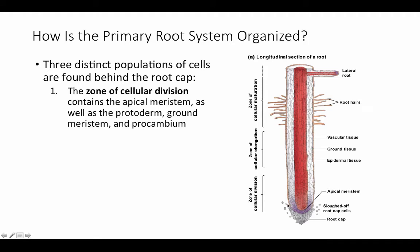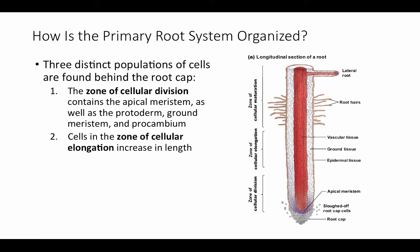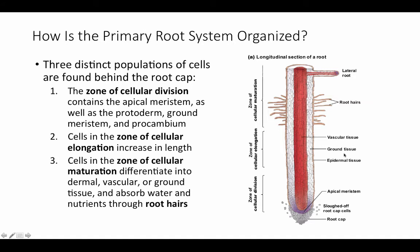We find three distinct populations of cells behind the root cap. First, there's the zone of cellular division. Then there's the zone of elongation — when a plant cell divides, it lays down a new cell wall between the divided nuclei, leaving cells at half the original size. To reach normal cell size, they need to elongate, primarily by expanding the central vacuole. Finally, there's the zone of cellular maturation or differentiation, where cells differentiate into their particular cell types — epidermal cells giving rise to root hairs, ground tissue cells differentiating into specific functions, and differentiation of the vascular tissues.